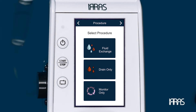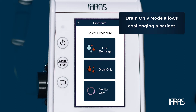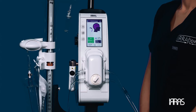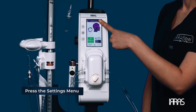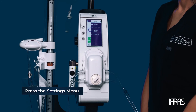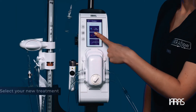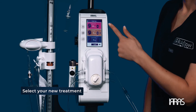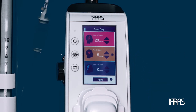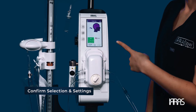Changing Therapy. During the course of treatment, based on the patient's evolving condition, the treatment option may need to be changed. The control unit can be placed into a drain-only mode or a monitor-only mode. This will allow you to challenge a patient at the end of treatment or operate the system without any irrigation. To place the control unit into drain-only or monitor-only mode, press the Settings menu on the touch screen and select the Procedure option. Based on your physician orders, select your new treatment. Confirm that you have selected the correct treatment and settings per physician orders and press the Apply button on the screen.